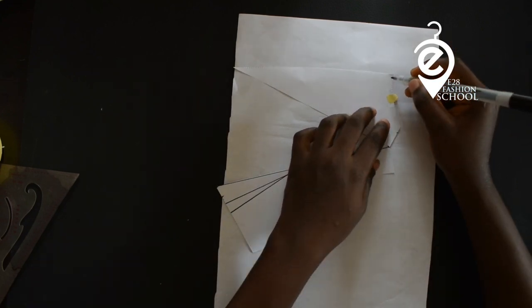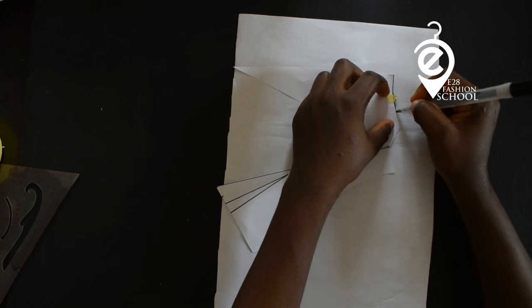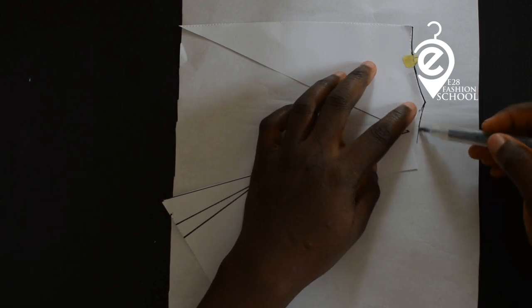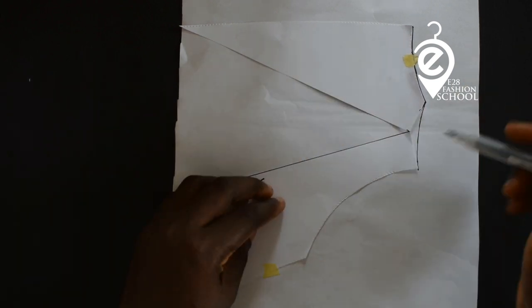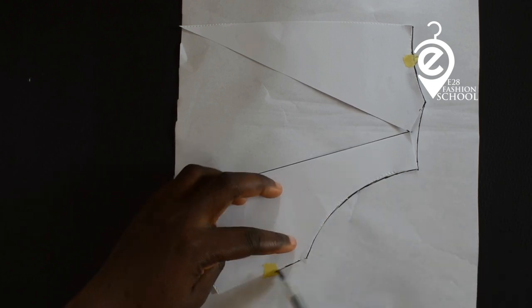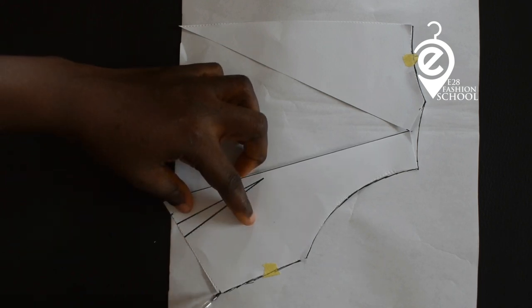Draw your neckline like so. For the shoulder, don't follow the sharp shape, just blend it a bit curvy. Then you draw your armhole to the side.